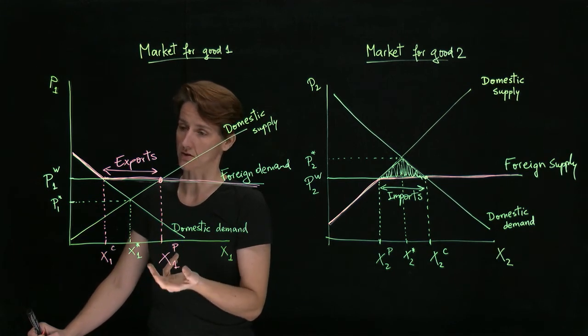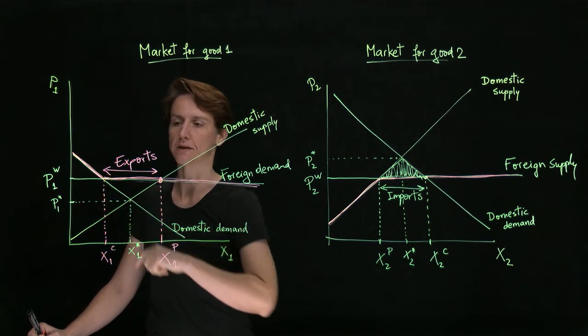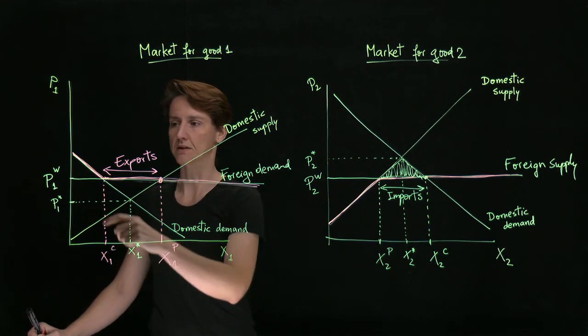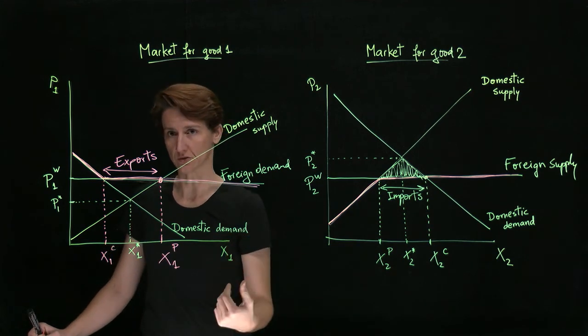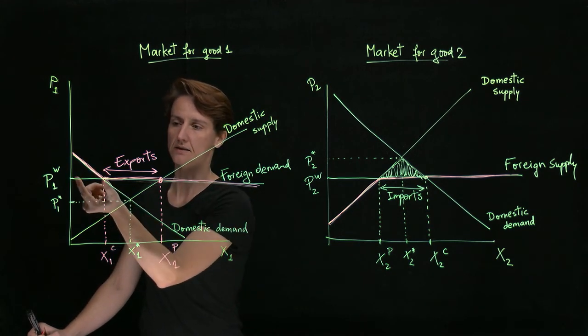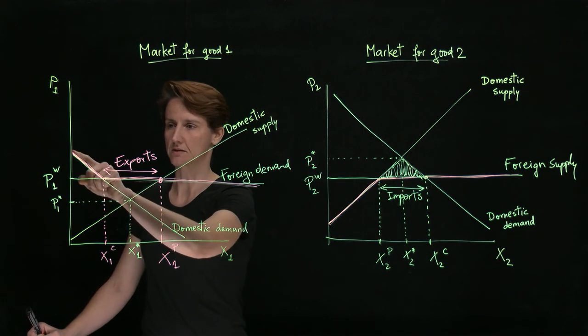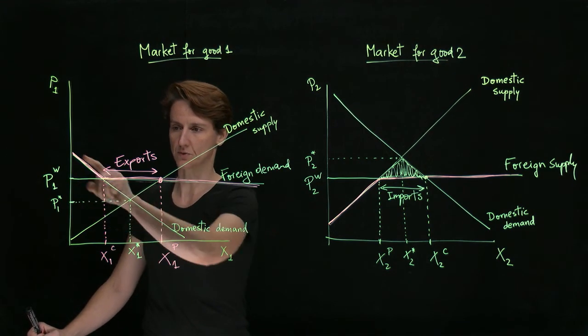Domestic consumers are worse off. They're forced to now pay a higher price because they're competing with foreign consumers and they're buying fewer units. So their new surplus is much smaller than before.